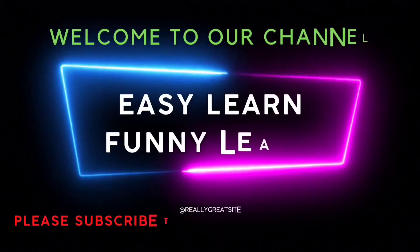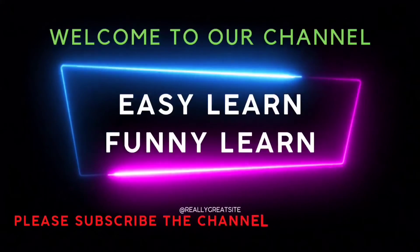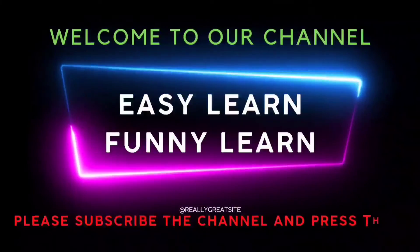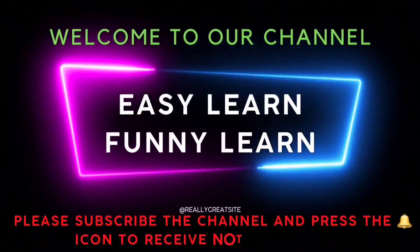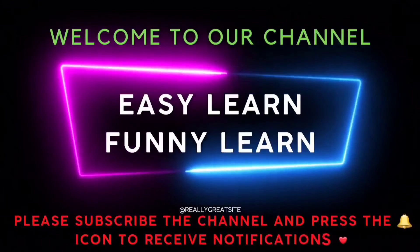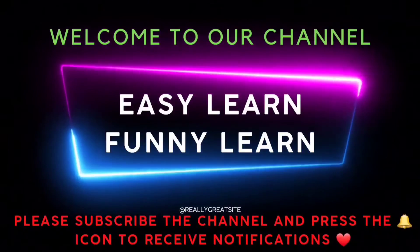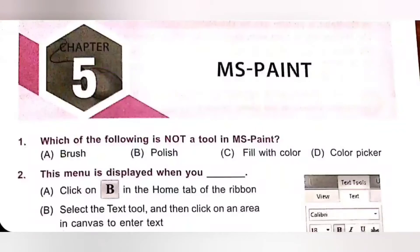Welcome to our channel — Easy Learn, Funny Learn. Please subscribe to the channel and press the bell icon to receive notifications. In this video, we are going to see Chapter 5, MS Paint, from the National Cyber Olympiad NCO MTG Workbook of Class 4.